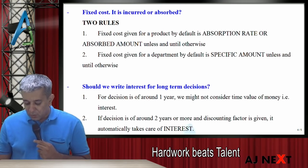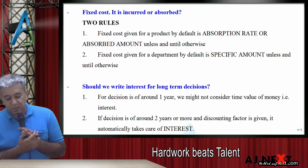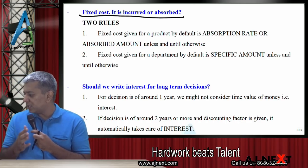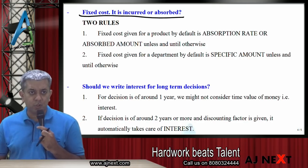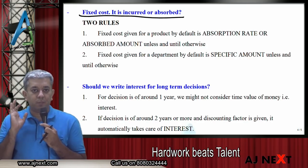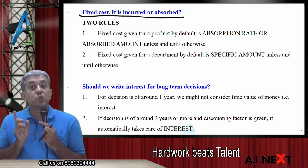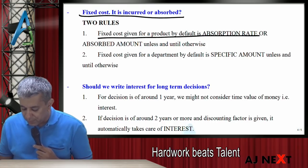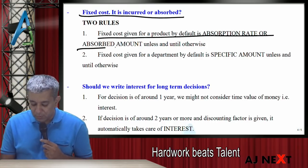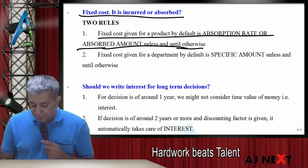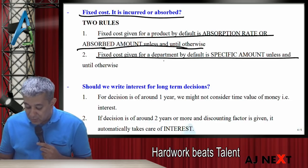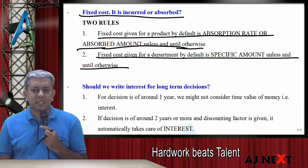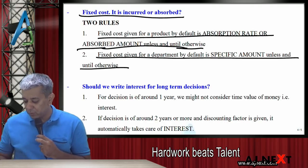Capital cost sara ka sara cover up kar liya. Ab fixed cost. Fixed cost ke liye rules: by default, fixed cost for a product means absorbed amount, unless and until told otherwise. Fixed cost for a product, by default, is absorption rate or absorbed amount, unless and until told otherwise. Lekin fixed cost for a department is specific amount, unless and until told otherwise. Department ke liye toh fixed cost lag sakta hai, product ke liye by default nahi lagta.